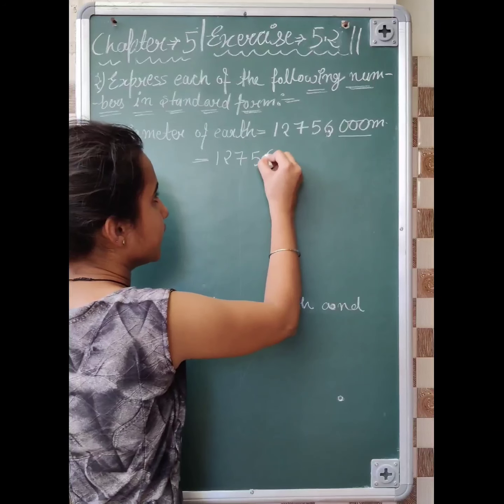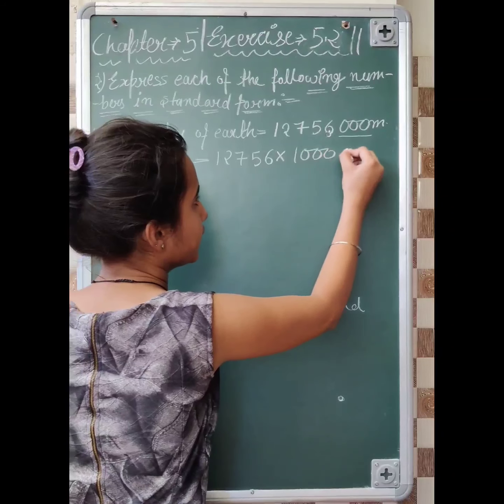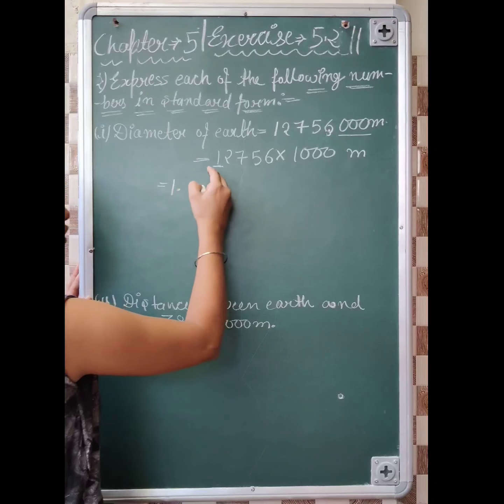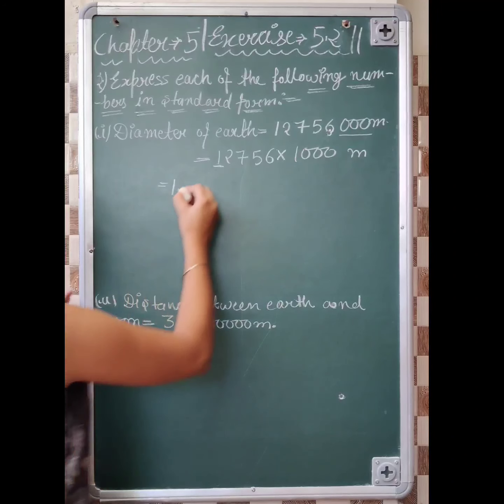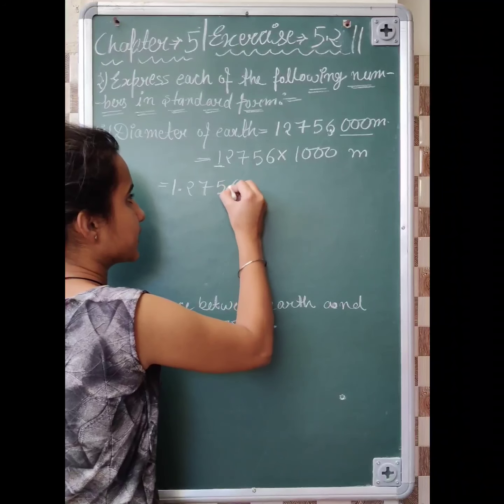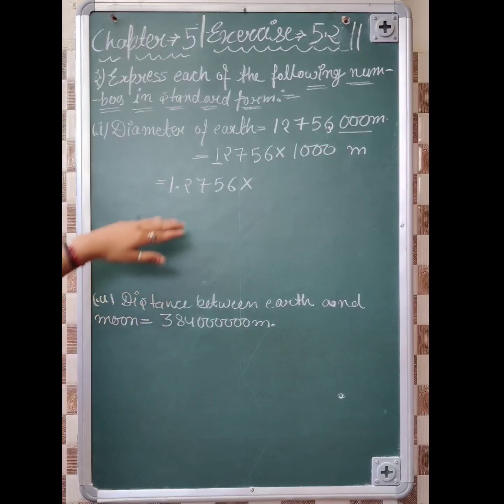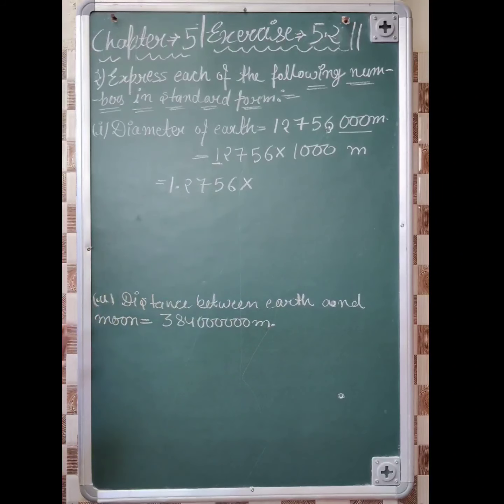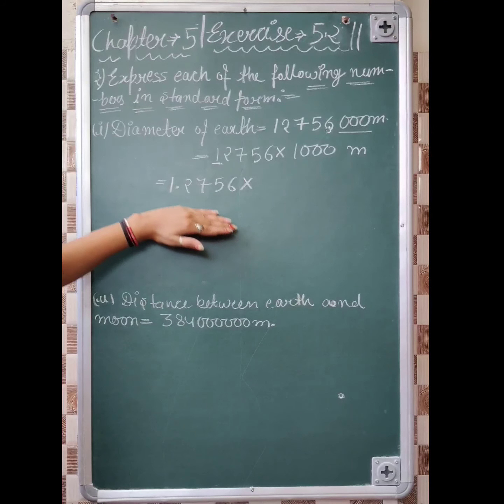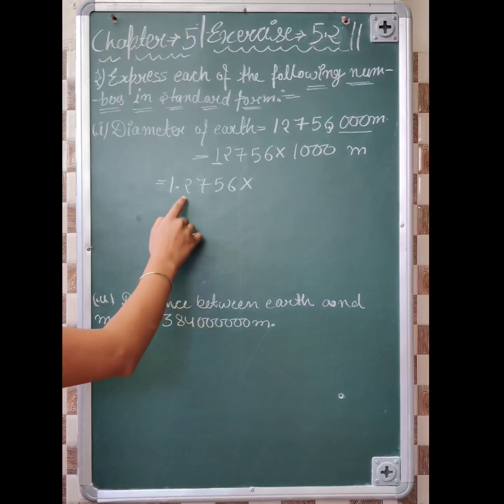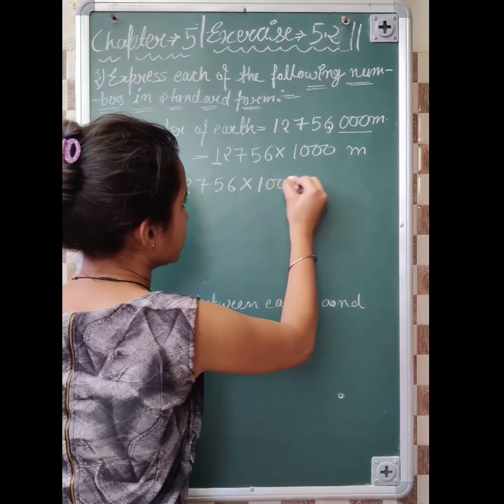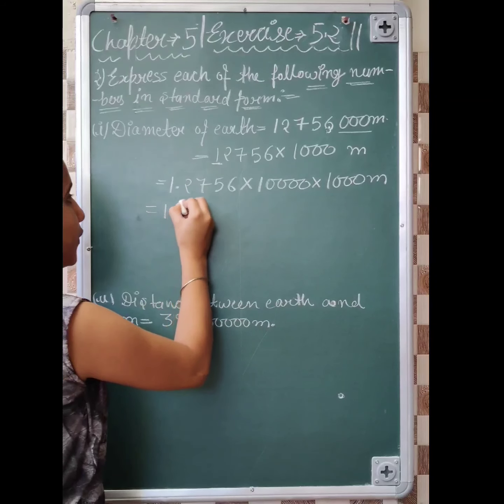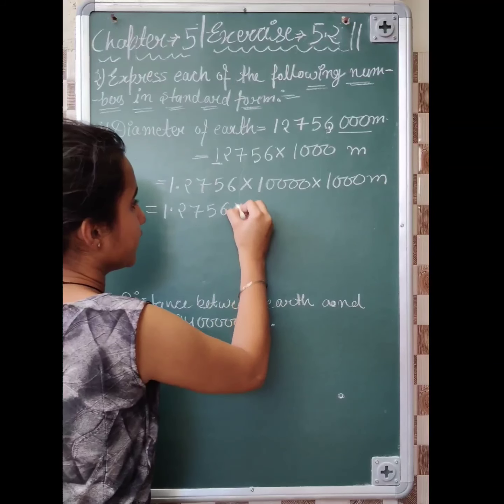So, 1, 2, 7, 5, 6 into 1, 2, 3 meters. Three zeros, three zeros we have separated. That means 1, 2, 3, 4 into 1000. That was already given.